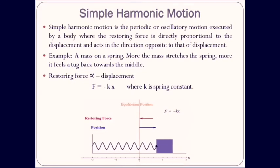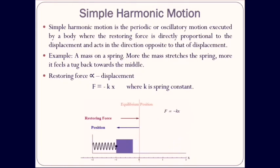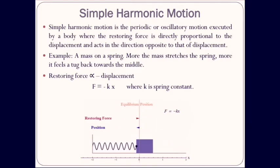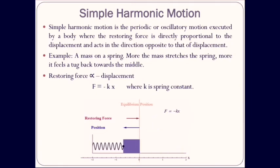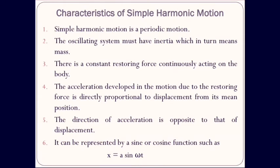This restoring force is directly proportional to the displacement — more the displacement, more is the force with which the body wants to return to its original position. Simple harmonic motion is the periodic or oscillatory motion executed by a body where the restoring force is directly proportional to the displacement and acts in the direction opposite to that of the displacement. In terms of equation, it is given as F equals minus k times x, where k is the spring constant, or k can also be written as minus F over x.